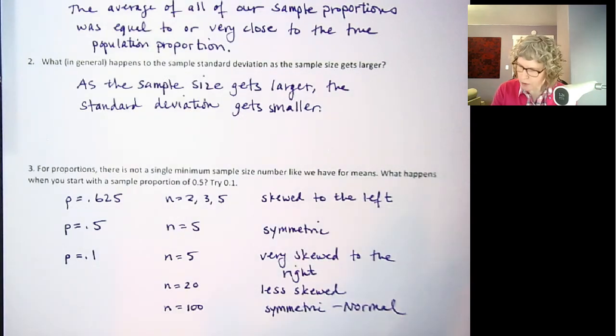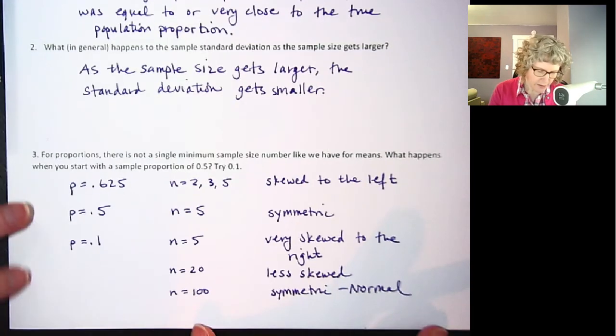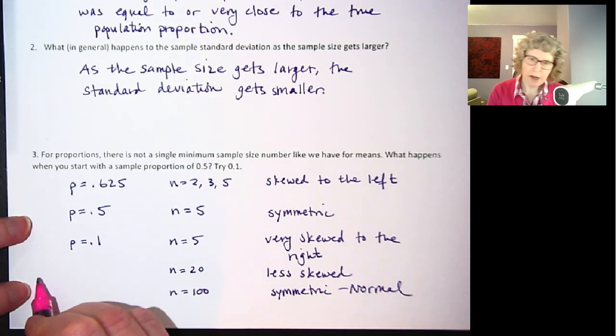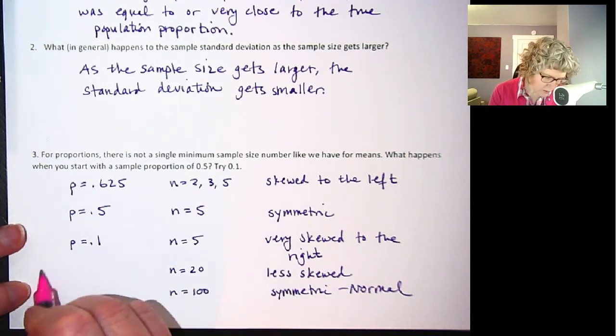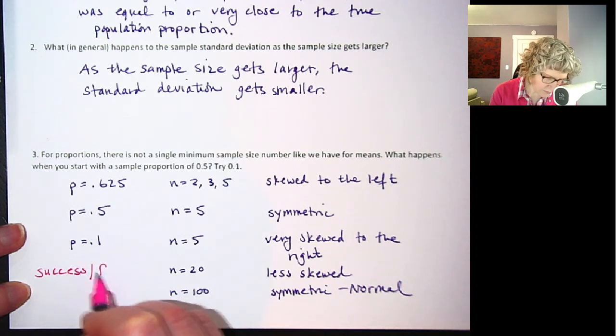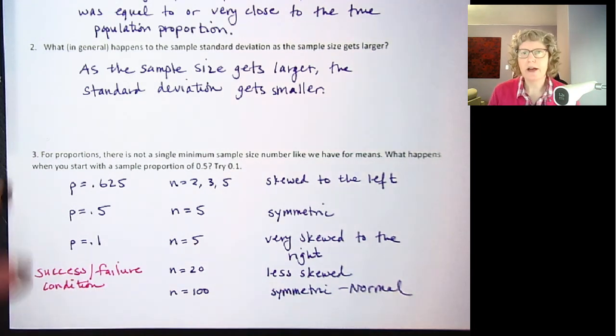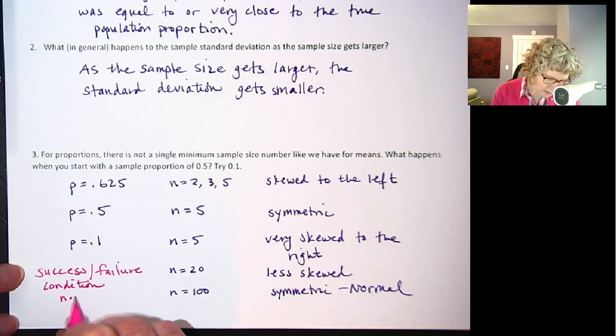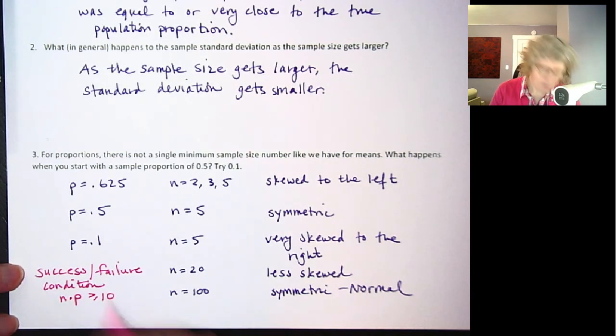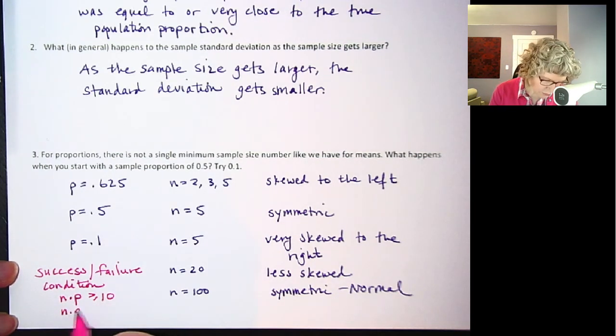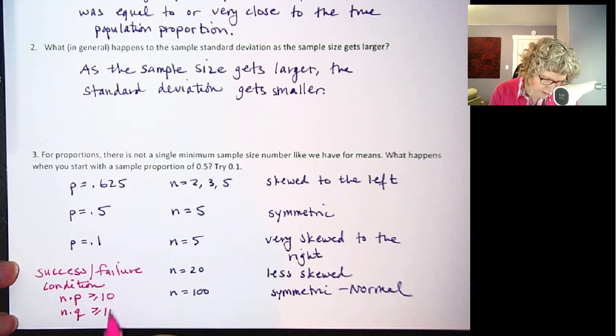Okay, so what we're going to see in the next video, it's all written out, but I'll just summarize it here so you know it goes with this too. It's called the success failure condition. And someone figured out how to summarize this in terms of n and p. So if n times p is greater than or equal to 10, and n times q is greater than or equal to 10.